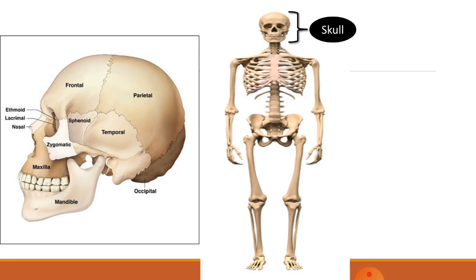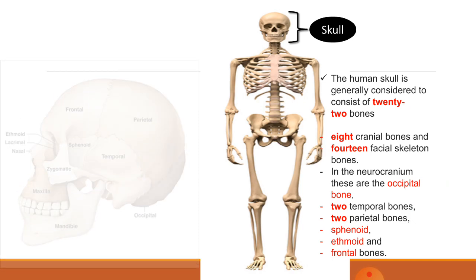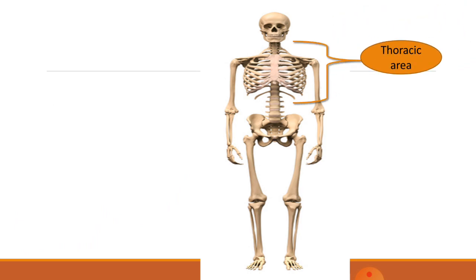The human skull is generally considered to consist of 22 bones total — 8 cranial bones and 14 facial skeletal bones. In the neurocranium, these are: the occipital bone, two temporal bones on both sides, two parietal bones, the sphenoid bone, the ethmoid bone, and the frontal bone.